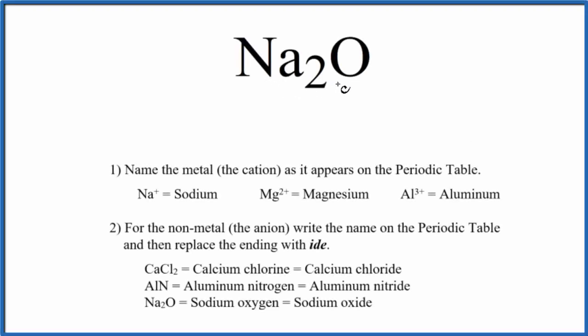To write the name for Na2O, we first have to figure out what type of compound we have. Since we have a metal and a nonmetal, this is going to be an ionic compound.